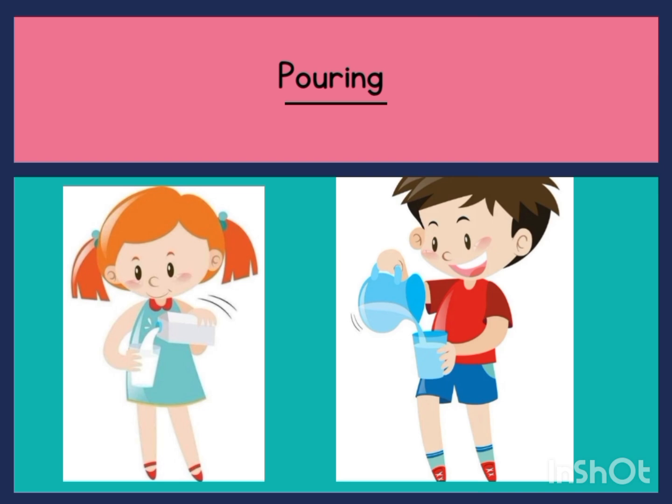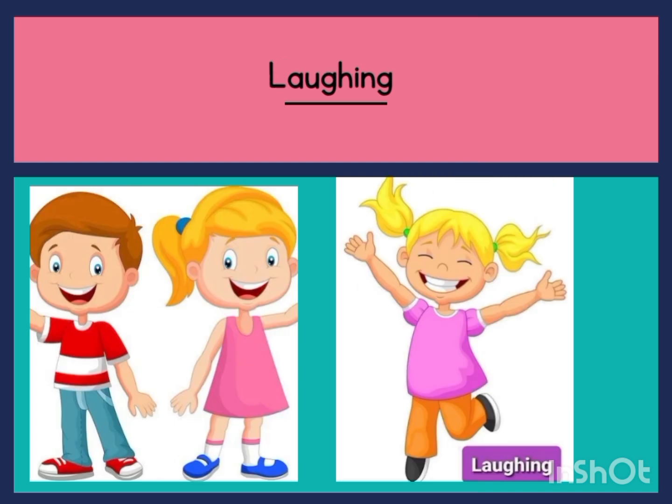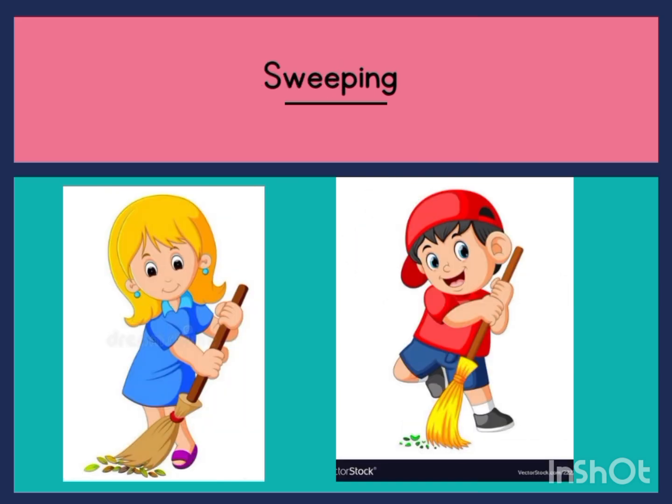Pouring — they are pouring. Pouring milk, pouring water. So the action that is being performed here is pouring. Laughing — ha ha ha ha! Can you also laugh with us? Let me hear you laughing. Ha ha ha ha! Laughing is an action word. They are performing an action and laughing is an action word.